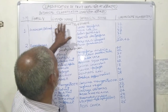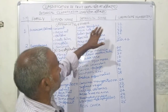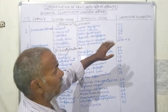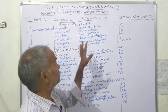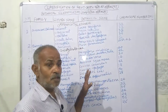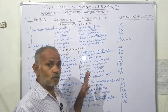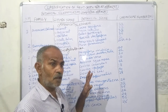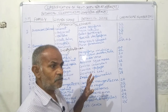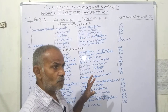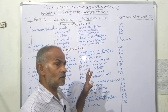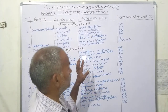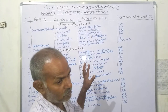In this table, the columns are: serial number, family, common name, botanical name, and chromosome number — the diploid or somatic chromosome number. Students preparing for NET, students of VSCAG B.Sc., and horticulture and agriculture students will also be benefited by this lecture.